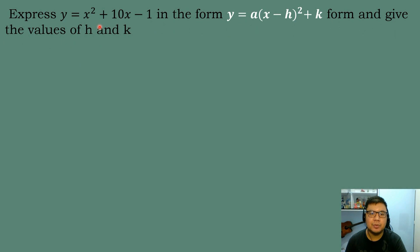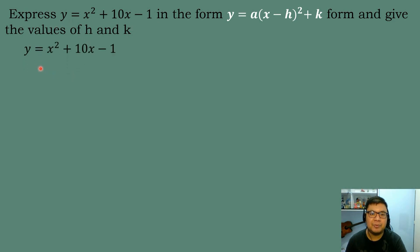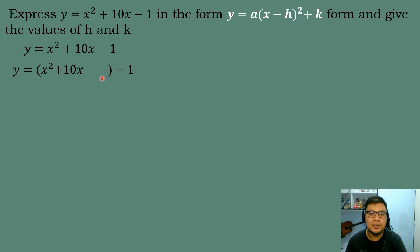Let's solve our next example. Express y = x² + 10x − 1 in vertex form, y = a(x − h)² + k, and give the values of h and k. The first thing we do is write the equation, then perform completing the square by grouping the terms with x: y = (x² + 10x   ), leaving a blank, then followed by minus 1. We divide the numerical coefficient of the linear term by 2 and square the answer.